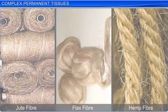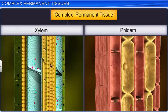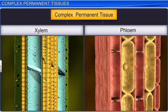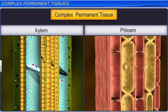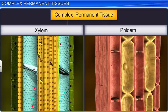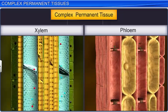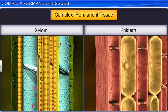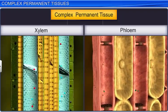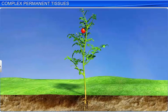Complex permanent tissues are engaged in the transportation of water, minerals, nutrients, and organic substances. Therefore, they are extremely essential for the survival of plants.